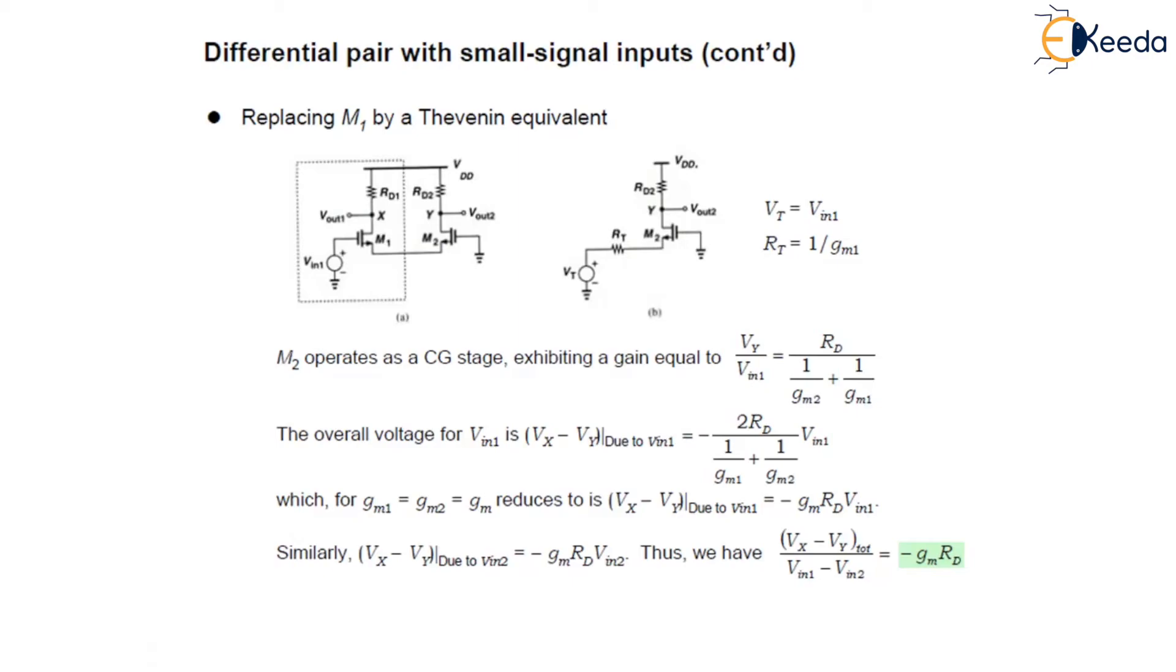As we are taking Gm2 equals Gm1, and by virtue of symmetry, the effect of Vin2 at X and Y is also identical to that of Vin1, except for a change in the polarities. Vx minus Vy due to Vin2 can be given as minus GmRd Vin2.